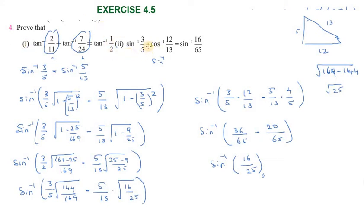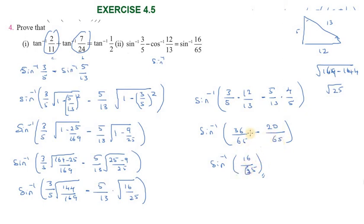We rewrite as sin inverse of 3 by 5 minus sin inverse of 5 by 13, then apply the formula: sin inverse x minus sin inverse y equals sin inverse of x times square root of 1 minus y squared minus y times square root of 1 minus x squared. Substituting: 3 by 5 and 5 by 13 squared gives 25 by 169 and 9 by 25. Then 169 minus 25 is 144 and 25 minus 9 is 16, giving 3 by 5 into 12 by 13 minus 5 by 13 into 4 by 5, which multiplies to 36 by 65 minus 20 by 65.